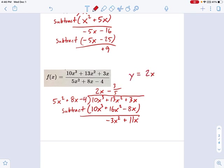y equals 2x minus 3 fifths. This is our oblique asymptote. And we're all done.